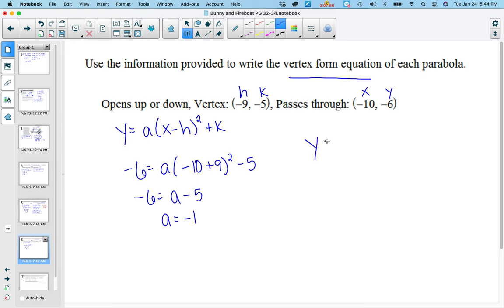So now I know my equation is y equals negative, you don't have to put the 1, you can just put a negative sign. x plus 9 quantity squared minus 5.